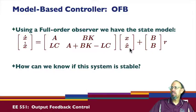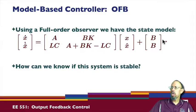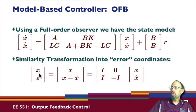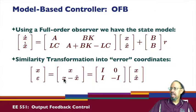The question arises: how can we know if this system is stable? We have the system in coordinates x and x-hat. Now I'm going to put them into error coordinates. Instead of using x and x-hat, I'm going to use x and the error, which is x minus x-hat.